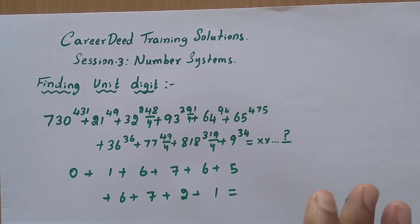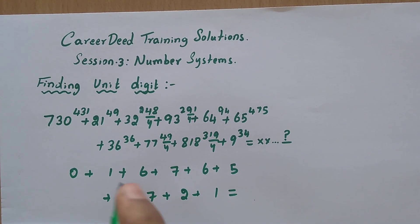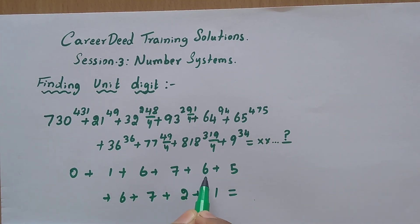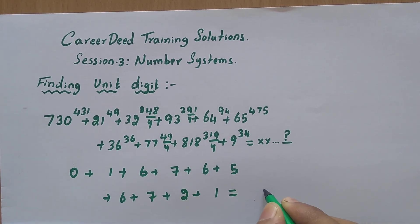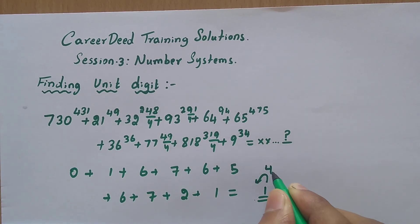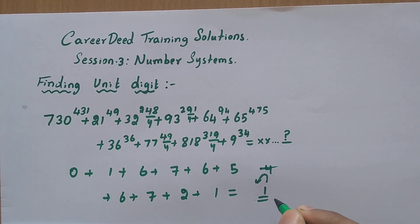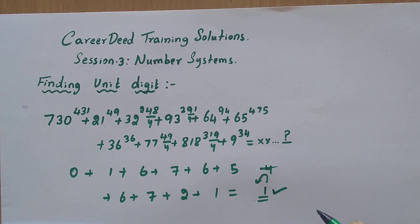Now add all the unit digits: 0 + 1 + 6 + 7 + 6 + 5 + 6 + 7 + 2 + 1. Adding step by step: 6+1=7, 7+7=14, 14+6=20, +5=25, +6=31, +7=38, +2=40, +1=41. The last digit of the total is 1, and you don't need to worry about the carry since you only need the last digit. So the final answer is 1.